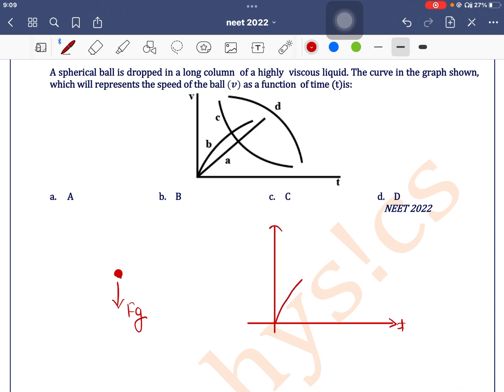But as soon as this passes through a highly viscous fluid, a viscous force starts. Viscous force as well as force of buoyancy starts acting on it, which reduces the effect of force of gravity. And its speed decreases as time increases.